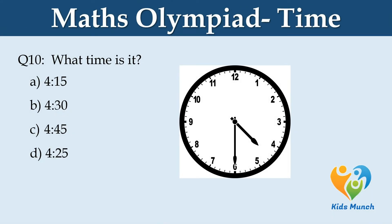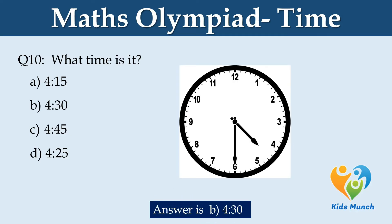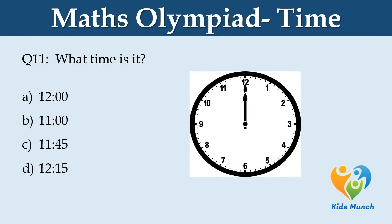What time is it? Option A: 4:15. Option B: 4:30. Option C: 4:45. Option D: 4:25. What time is it? Option A: 12. Option B: 11. Option C: 11:45. Option D: 12:15.